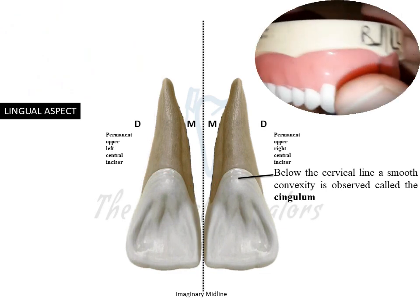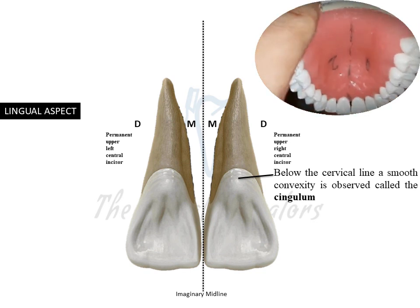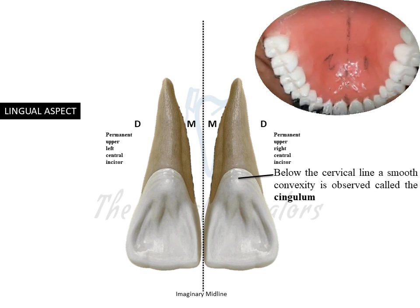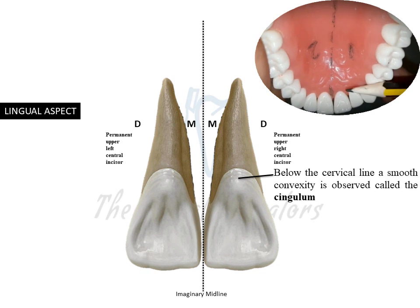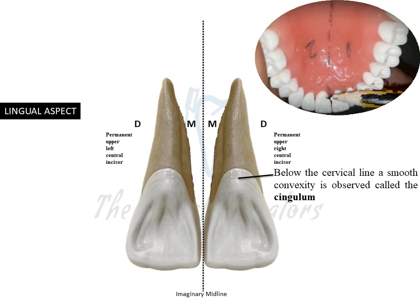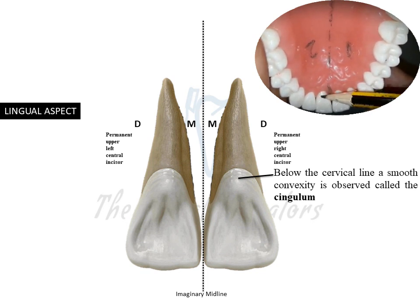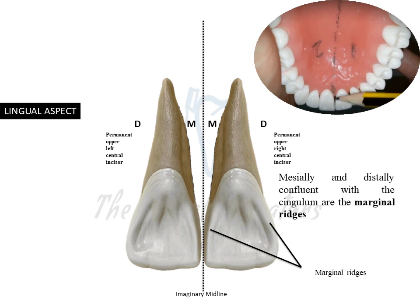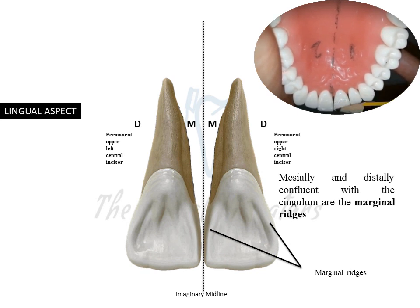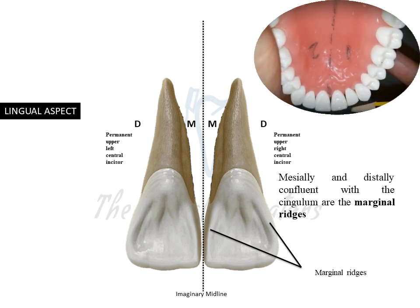From the lingual aspect, the permanent maxillary central incisor shows a bulging convexity near the cervical line known as the cingulum, present for both upper left and upper right central incisors. In connection with the cingulum, there are elevations on the mesial and distal aspects referred to as marginal ridges — the mesial marginal ridge is closer to the midline, and the distal marginal ridge is away from the midline.